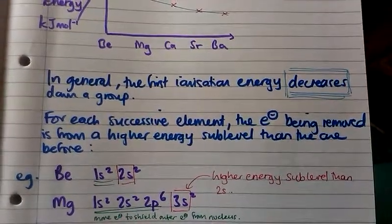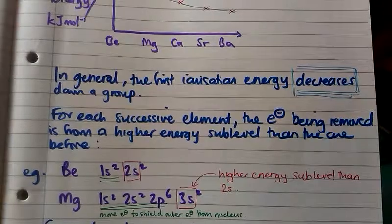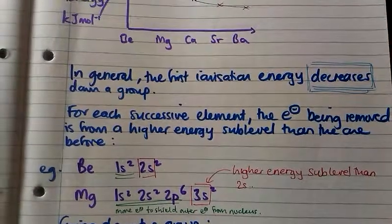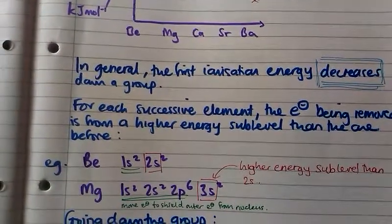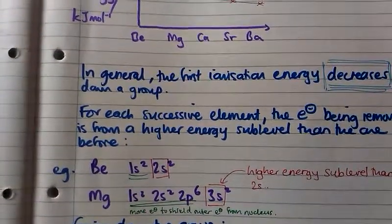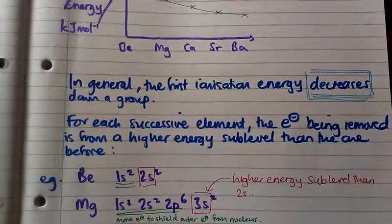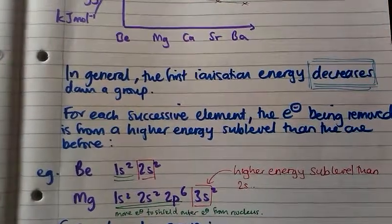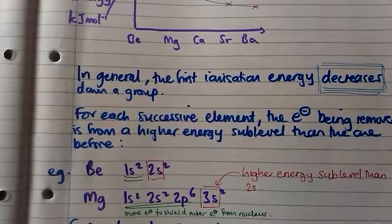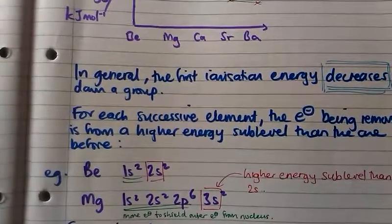Notice that in magnesium there are more inner electrons — it has 10 inner electrons shielding the two outer electrons from the nucleus, whereas in beryllium it's only got two electrons to shield the outer electrons. So the outer electron in magnesium is more shielded from the nucleus and it's further away, so it's held on less strongly than in beryllium and it's easier to remove.